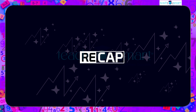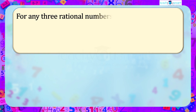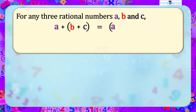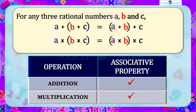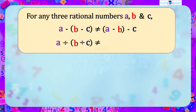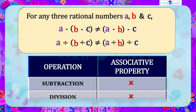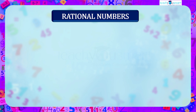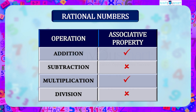Let's recall what we discussed today. For any three rational numbers a, b, and c: (a + b) + c = a + (b + c) and (a × b) × c = a × (b × c). While (a − b) − c ≠ a − (b − c) and (a ÷ b) ÷ c ≠ a ÷ (b ÷ c). Hence, for rational numbers, addition and multiplication are associative, while subtraction and division are not associative.